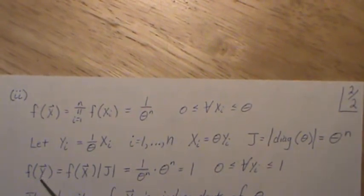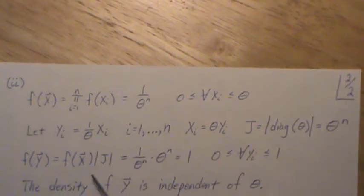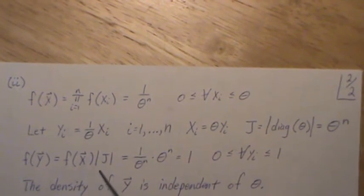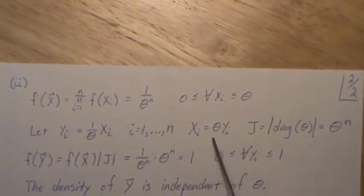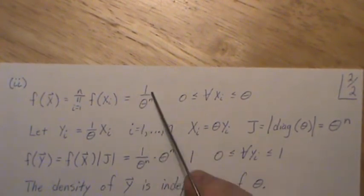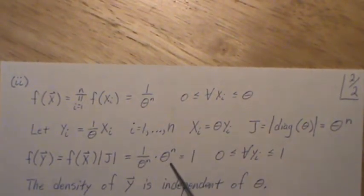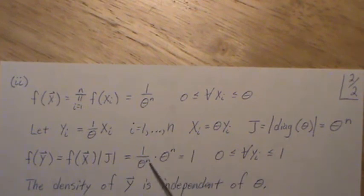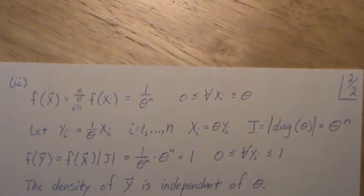So the joint distribution of the y's, and remember, y1, y2, etc., is the joint distribution of the x's times the absolute value of the Jacobian. But you have to plug back in what is here. Right? So this is the density, and there's nothing to plug in, so it just comes down. This absolute value of the Jacobian, those cancel, and it's left with 1.